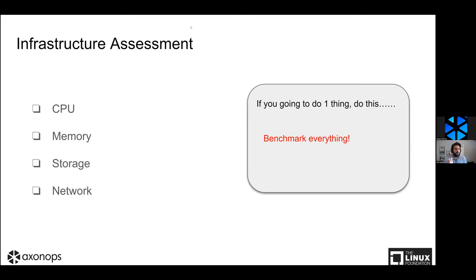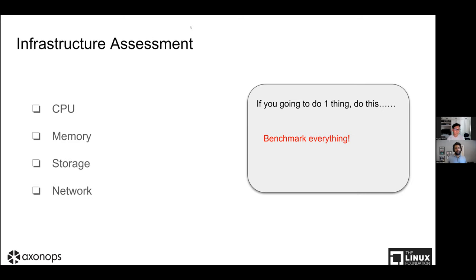I've worked in places where teams were just given hardware and either don't know what it can do or it might not be optimal for the Cassandra deployment. If you have the option to determine your hardware up front you'll be much happier. Cassandra doesn't perform well as CPUs scale up - if you throw 64 CPUs at it, it won't take full advantage. You'd rather have multiple smaller boxes than do vertical scaling, and your money goes further that way.